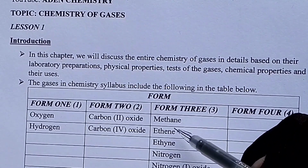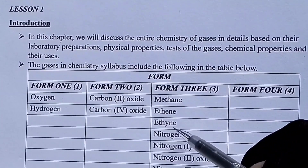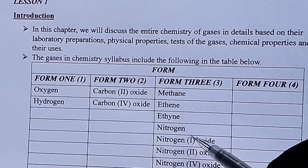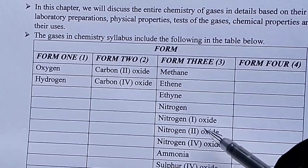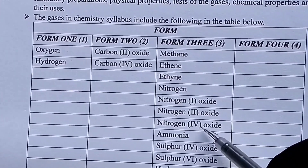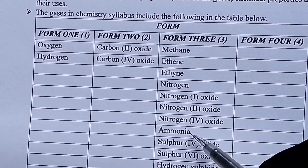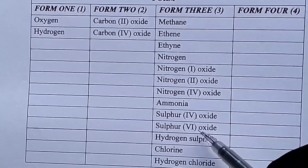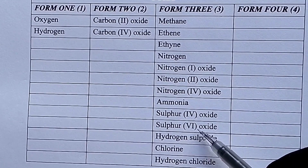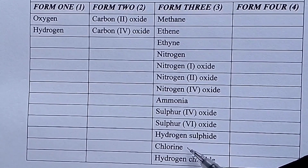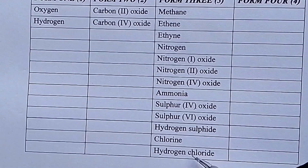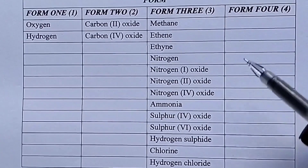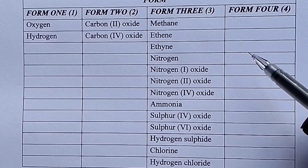The first gas in Form Three is methane gas. We also have ethane gas, ethyne gas, nitrogen gas, nitrogen(I) oxide gas, nitrogen(II) oxide gas, nitrogen(IV) oxide gas, ammonia gas, sulfur(IV) oxide gas, sulfur(VI) oxide gas, hydrogen sulfide gas, chlorine gas, and hydrogen chloride gas. Those are the gases we have in Form Three. Remember, in Form Four we have no gas at all.